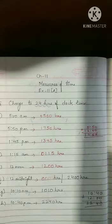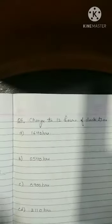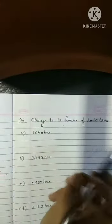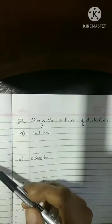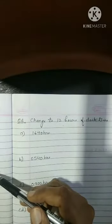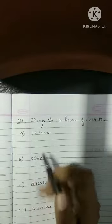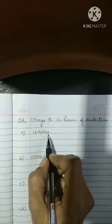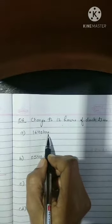Now come to the next question. Change to 12 hours clock time. Previous question was convert change into 24 hours clock. Now it is given 16:40 hours. Now we have to convert into 12 hours of clock. So how do we do?